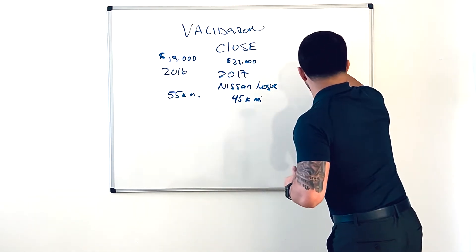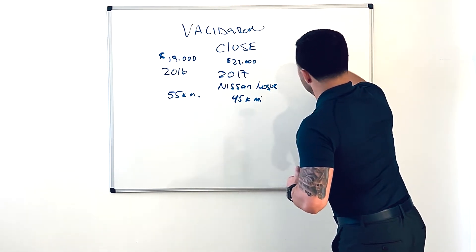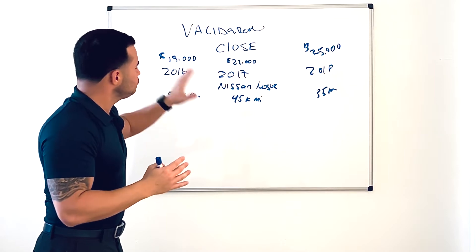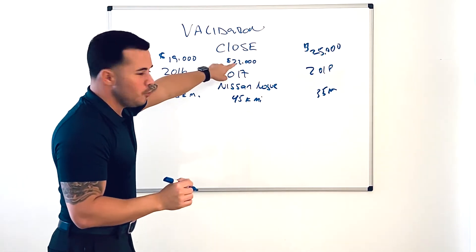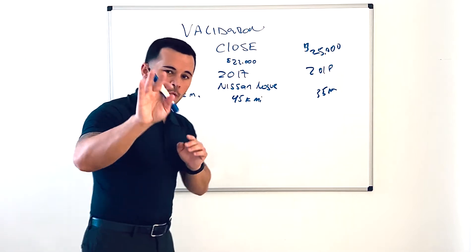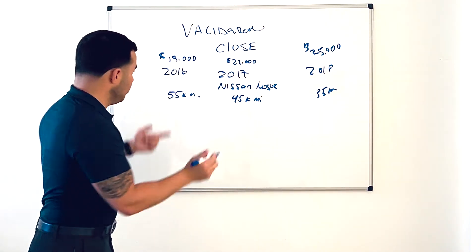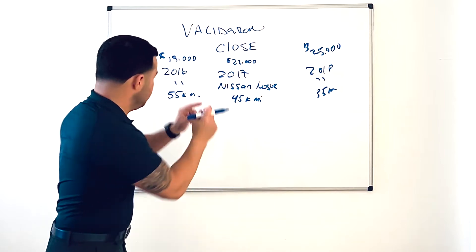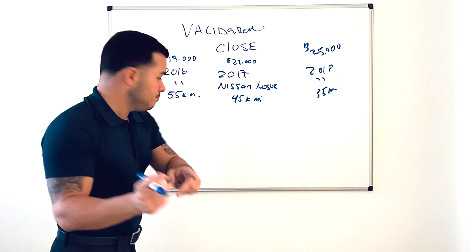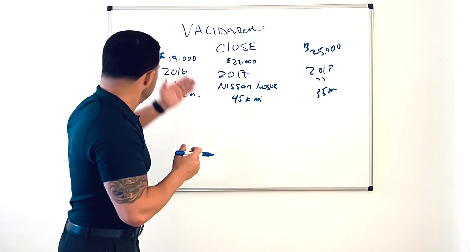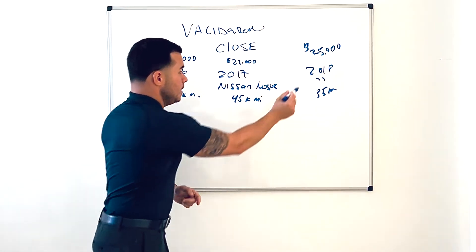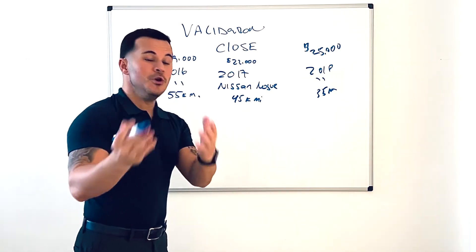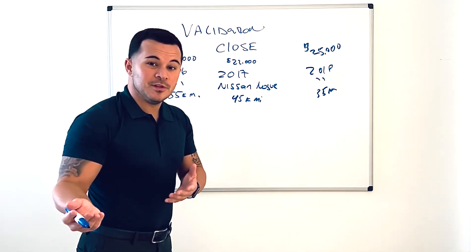Alright, so let's kind of think of what happened here. They were looking at the 2017 Rogue, 45,000 miles, price point of $22,000. You asked them, "What if I was able to find you a vehicle a year older?" I didn't specify the Rogue per se, but "Let's say I was able to find you a 2016, a year older, with only 55,000 miles on the vehicle for say $19,000? Or 2018, year newer, with only 35,000 miles on the vehicle for only $25,000?"